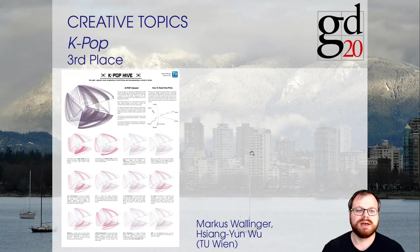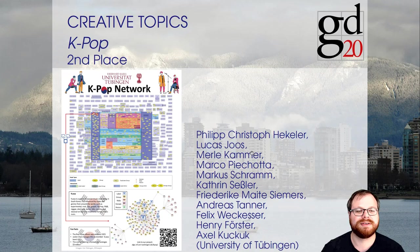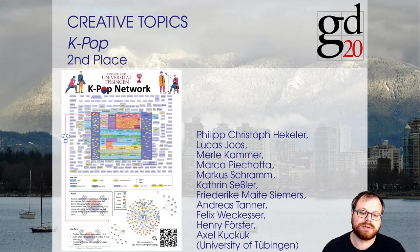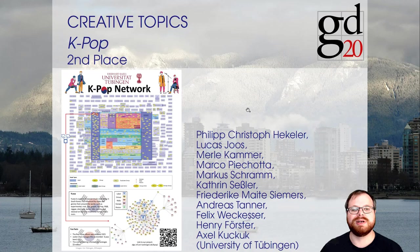In second place is a submission by a long list of authors from University of Tübingen. They not only submitted a poster but even implemented the whole thing as an interactive website that you can visit via the link or QR code. On this website you can click on artists and labels, explore the network, and get different styles of drawings for subgraphs — something we liked a lot about this submission.